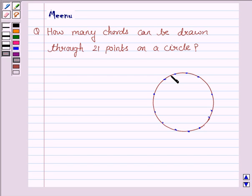Now, we know that each chord is the join of 2 points on a circle and we have to find number of all such chords.